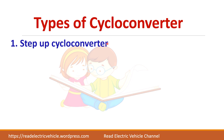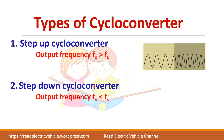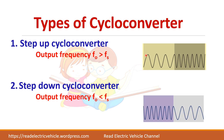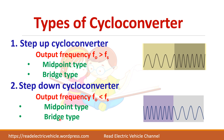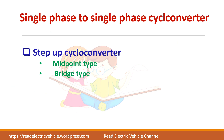Types of cycloconverter based on frequency: whether the output frequency is greater than the supply frequency (step-up) or output frequency is less than the supply frequency (step-down). In each case you have two subtypes — midpoint type and bridge type. In this video we will discuss single-phase to single-phase step-up cycloconverter, covering both midpoint type and bridge type in detail.